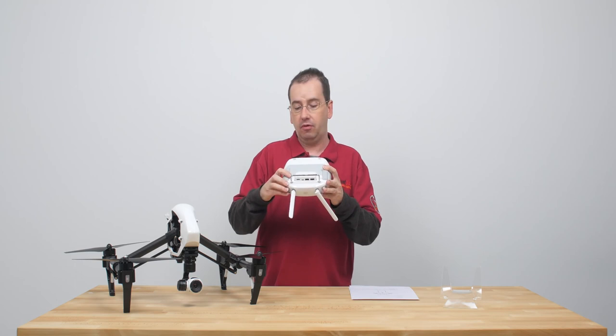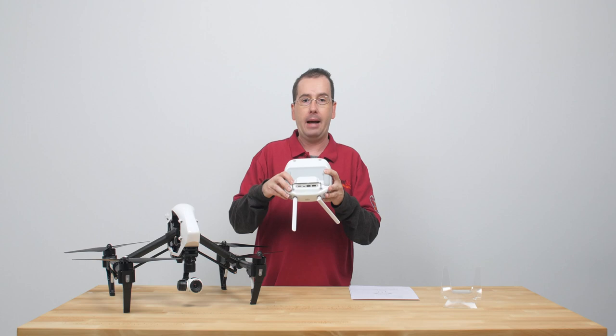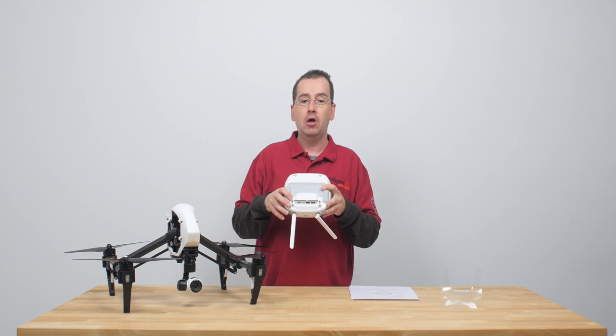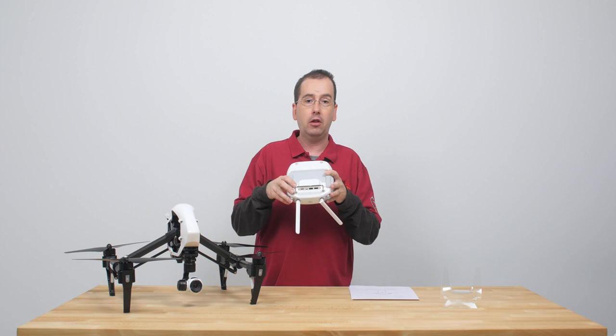The other button we've set up to switch back and forth from our camera view to the Google Maps view so we can see where our helicopter actually is in real time. Another really nice feature is that while you're flying the helicopter it draws the path that you've flown. So if you ever get lost, you can very easily just click over, look at the map, and see exactly where you are in real time.